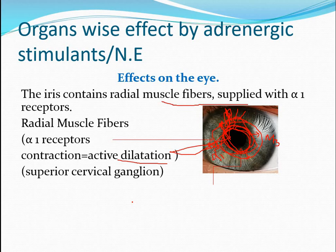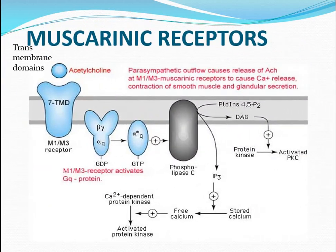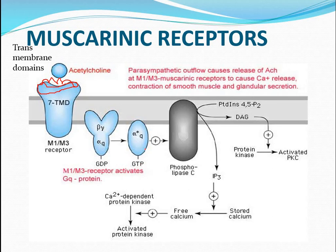Now, the M1 and M3 receptors are supplied with seven transmembrane domains — seven units in total. When the neurotransmitter acetylcholine comes and touches this receptor, it mimics the GDP which is converted via the alpha and beta monomers. GDP is then converted to GTP.